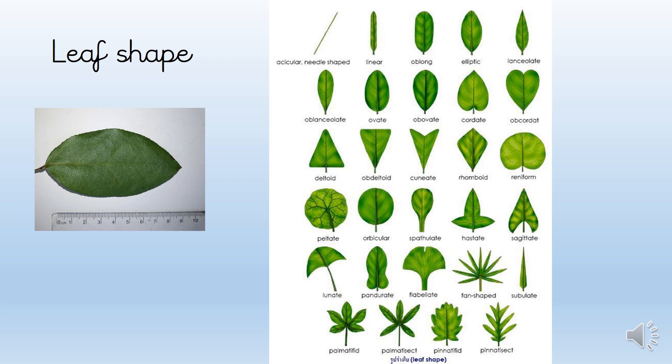Now the leaf shape. The leaf pictures and the leaf shape chart will be available for you to download so you can decide what shape your leaf is. What shape do you think my leaf is? Pause the video and see if you can spot it. I decided the leaf shape was elliptic — did you decide the same? Some of them are quite similar and it's difficult to decide exactly, but just get as close as you possibly can.